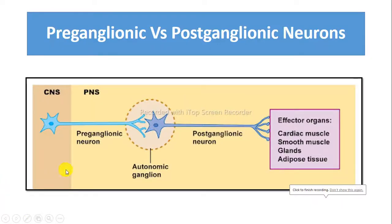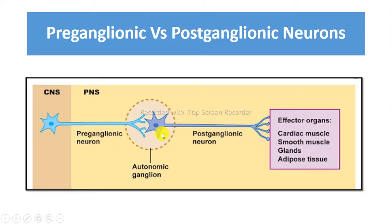Now we will see the difference between preganglionic and postganglionic neurons. The preganglionic neuron synapses with the postganglionic neuron, and this postganglionic neuron can synapse with more than one presynaptic neuron.